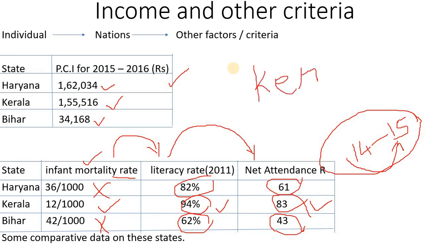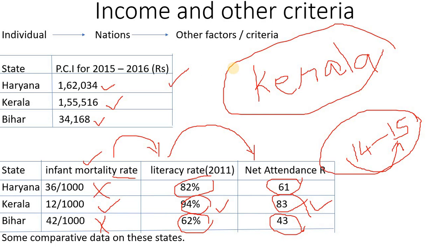Income alone is not sufficient to determine development. Other criteria such as infant mortality, literacy, and school attendance must also be considered.